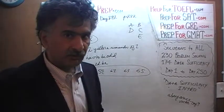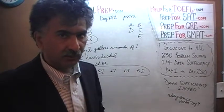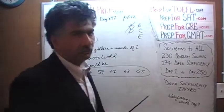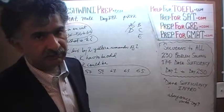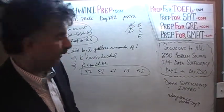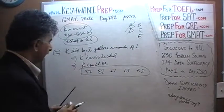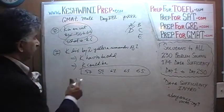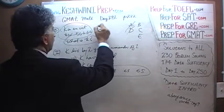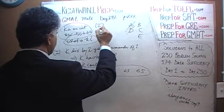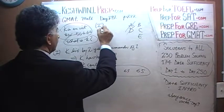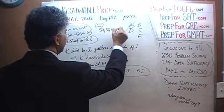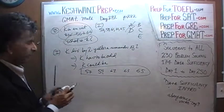Now that the first statement is not enough, the answer cannot be A or D — it must be B, C, or E. The possible values of K from statement 1 are: 57, 59, 61, 63, and 65. Let's look at statement 2.